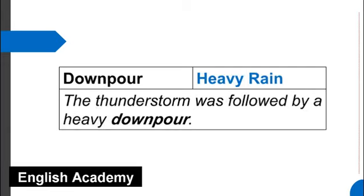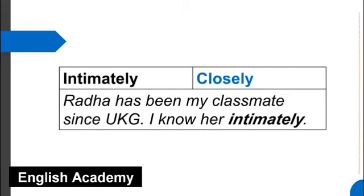Downpour means heavy rain. Example sentence: The thunderstorm was followed by a heavy downpour. Intimately means closely. Example sentence: Radha has been my classmate since UKG. I know her intimately.